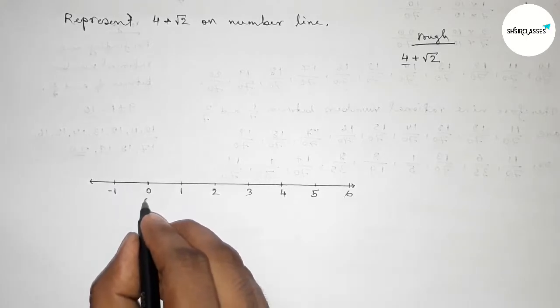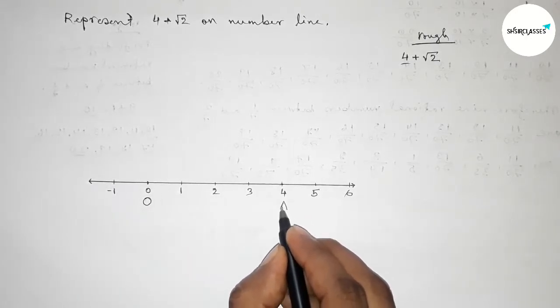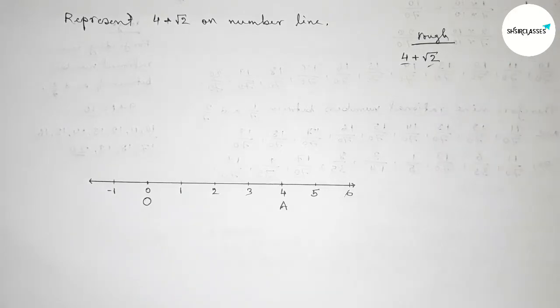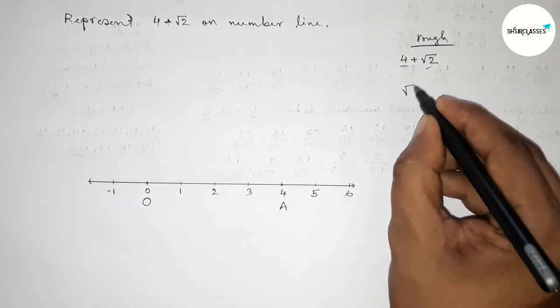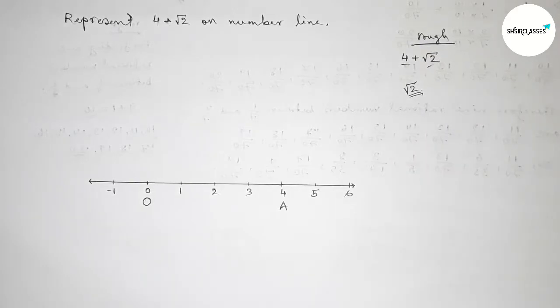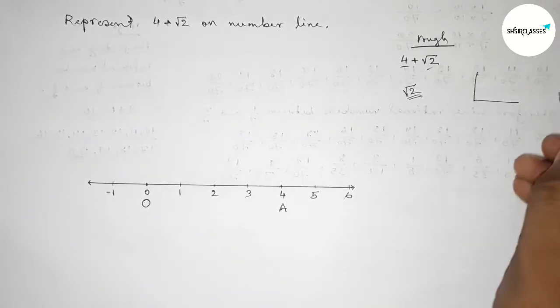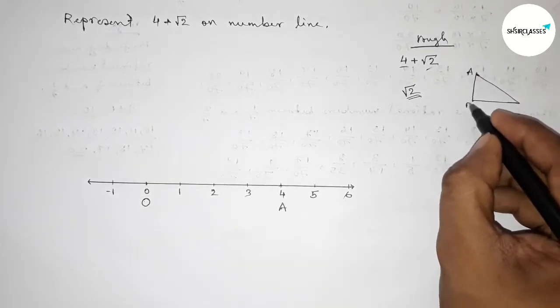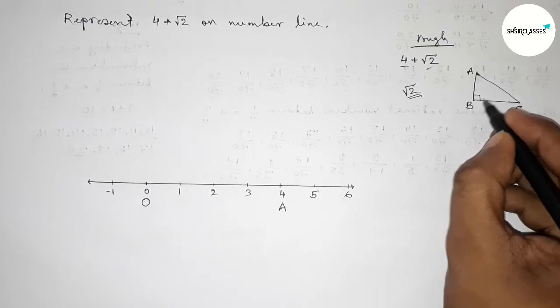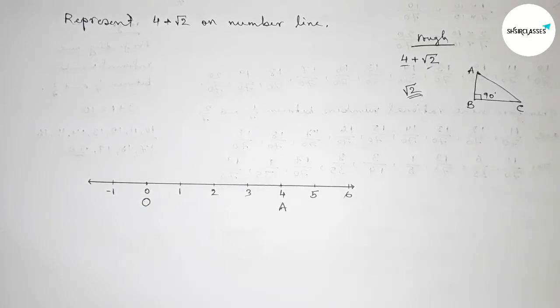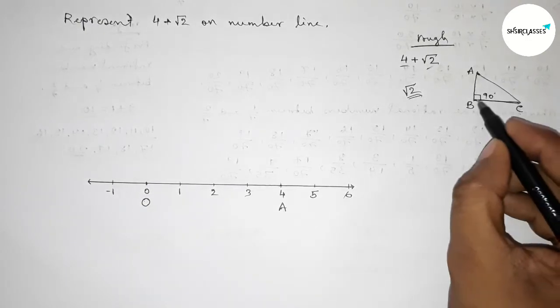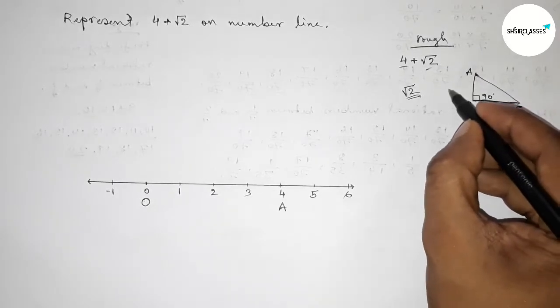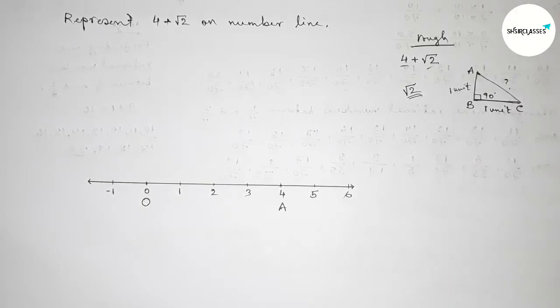Next representing root 2 from 4 to this side. Now discussing about root 2. First roughly drawing here a right angle triangle ABC, and this is 90 degrees. Now if we take the base equal to 1 unit length and the perpendicular equal to 1 unit length, then what is the hypotenuse?